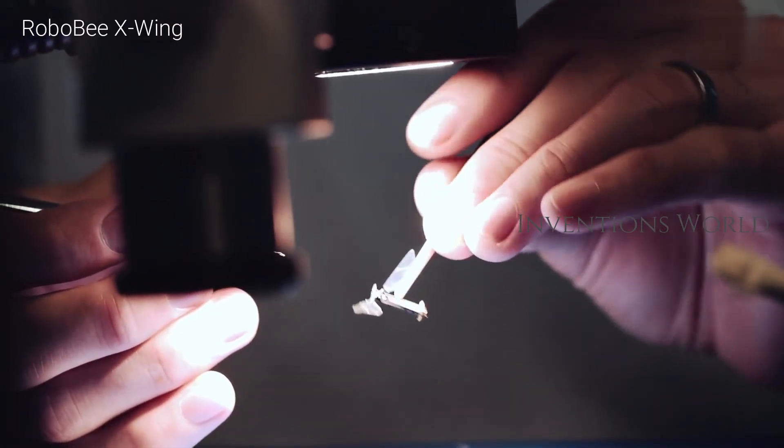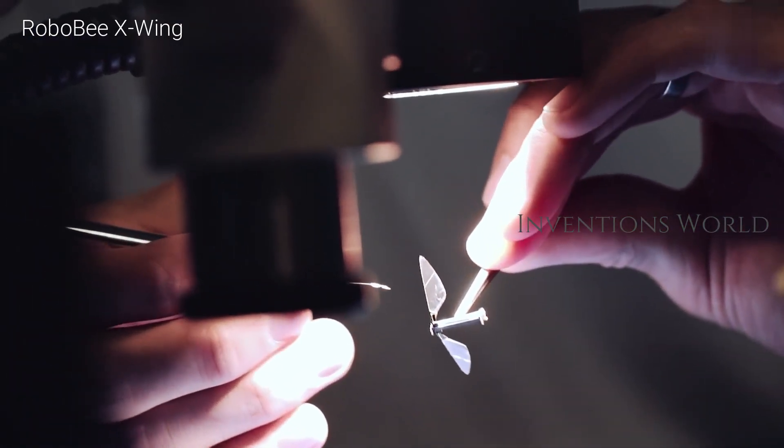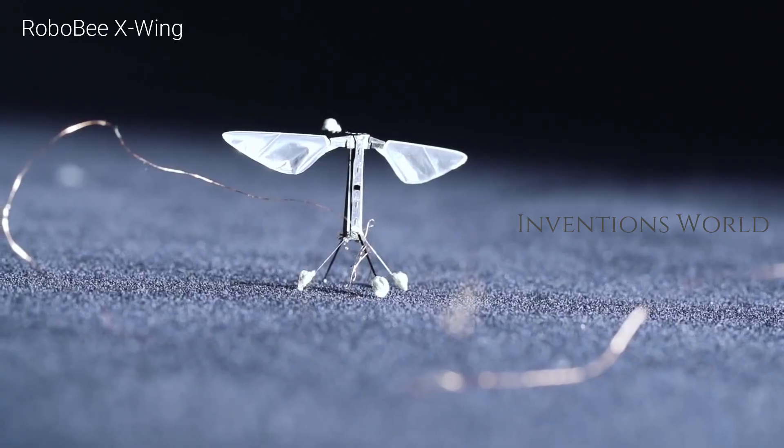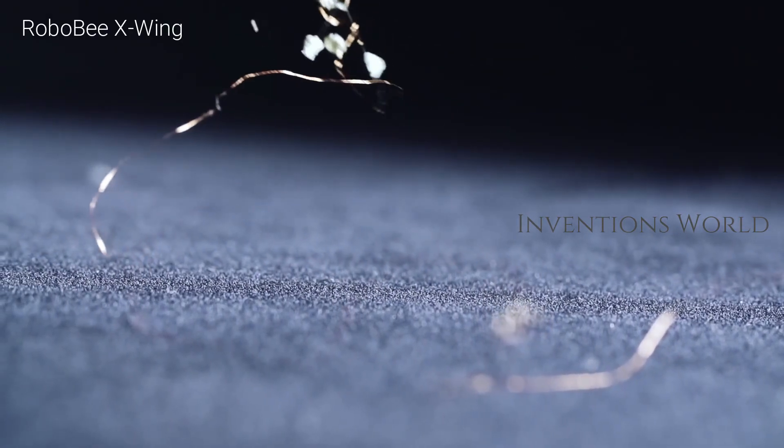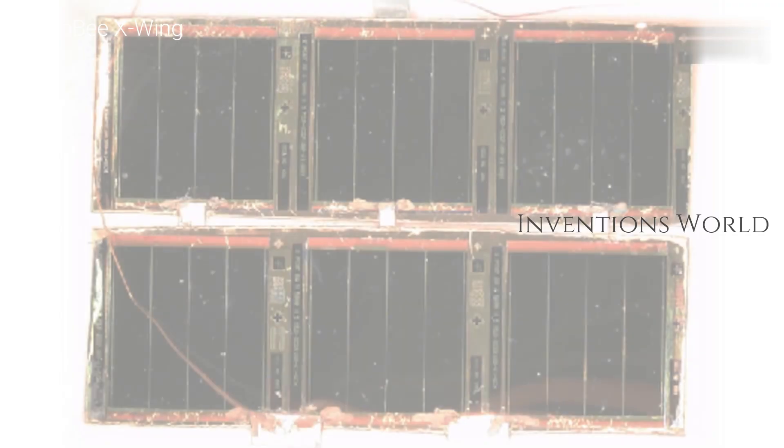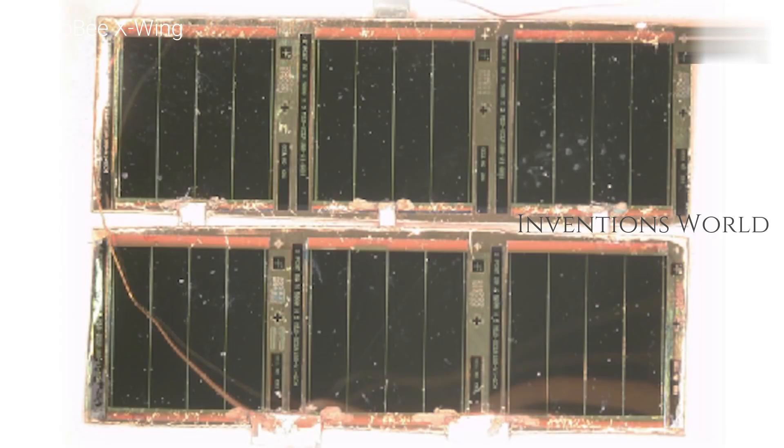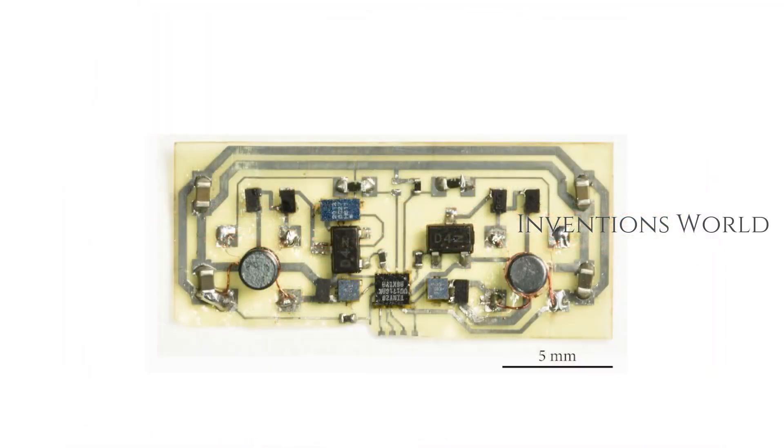The flying robot was developed by Noah Jaffers and his colleagues at Harvard University. Its wings are controlled by two muscle-like plates that contract when voltage passes through them. They are powered by six tiny solar cells weighing 10 mg each, which are located above the wings so as not to interfere with flight.